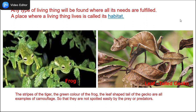The frog lives in places where its food is easily available and it cannot be seen by its enemies easily. The picture on your right is called a leaf-tailed gecko — it looks just like the leaf on the tree in which it lives. Why do they look like this? This is called camouflage. The stripes of the tiger, the green color of the frog, the leaf-shaped tail of the gecko are all examples of camouflage — they are so beautifully hidden in the habitat that they are not spotted easily by their prey or their predators.